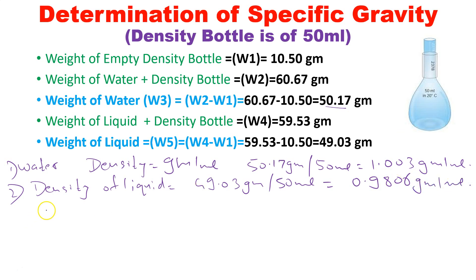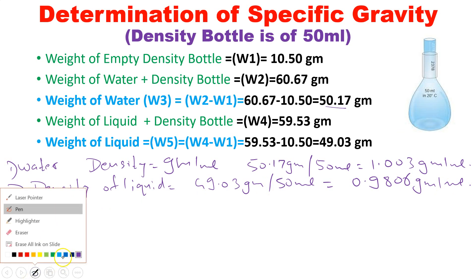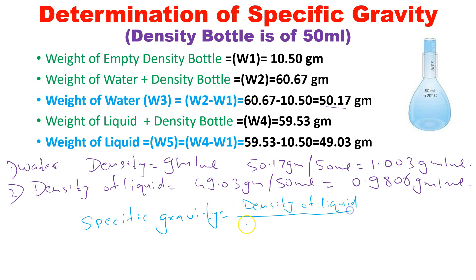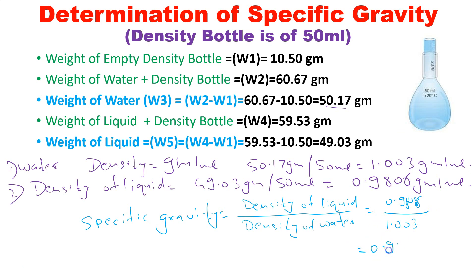Now I will calculate the specific gravity. The formula is: specific gravity equals density of liquid divided by density of water. The reference here is water, and the liquid is the oil sample. Density of liquid is 0.9806 grams per mL divided by 1.003 grams per mL. The specific gravity I get is 0.9772.